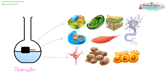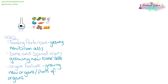Stem cells are fantastic things because they have the potential to turn into any other type of cell. They have a number of different uses. For example, if you're treating Parkinson's disease, they can be used to grow new brain cells. If we're talking about brain or spinal injury or bone injuries, they can be used to grow new bones to fill the gap. If we have organ failure, we can grow new organs or parts of organs instead of making someone wait on the incredibly long transplant waiting list.